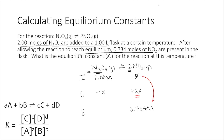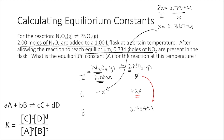Solving for X: 2X equals 0.734 M, so X equals about 0.367 M. The concentration of N2O4 started at 2 M and decreased by 0.367 M, so at equilibrium the concentration of N2O4 is 1.633 M. We'll save our rounding for the very end.